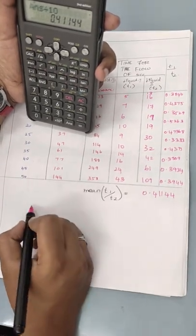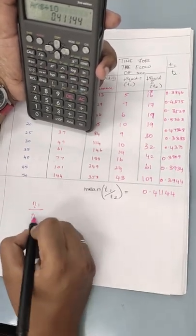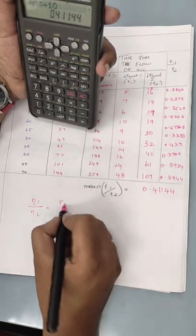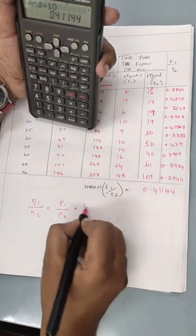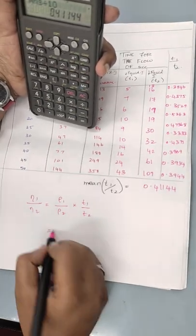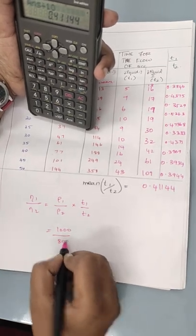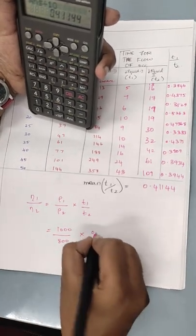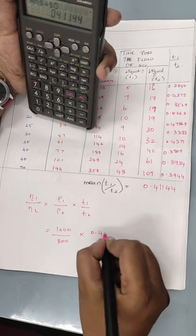Now I can substitute this value. Eta 1 by eta 2 is equal to rho 1 by rho 2 into t1 by t2. Rho is 1000, density of water. And for kerosene it is 800. Into t1 by t2 value is 0.4144.